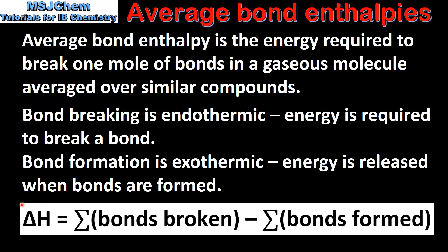To calculate the enthalpy change for a reaction using average bond enthalpies, we use this equation. The delta H, that's the change in enthalpy, is equal to the sum of the bonds broken minus the sum of the bonds formed.